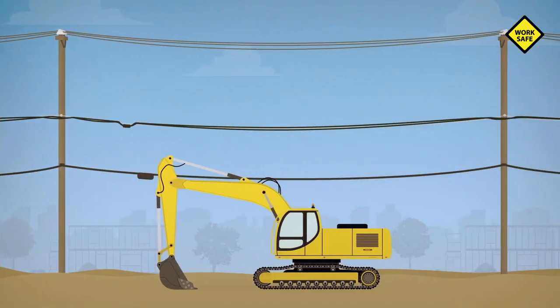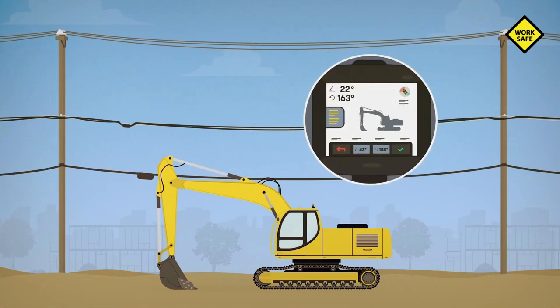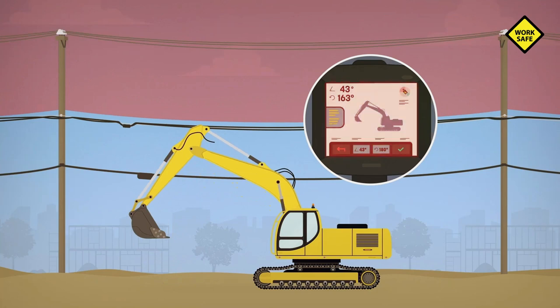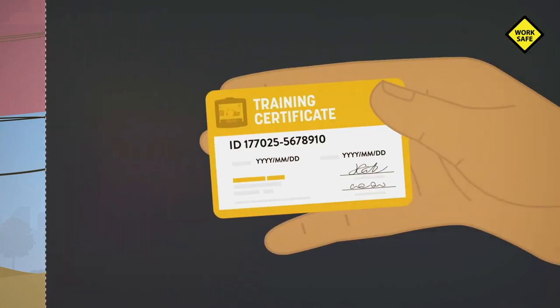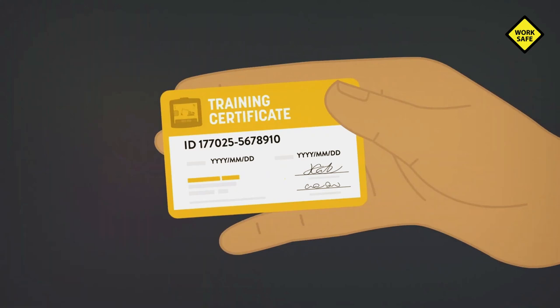Extendable equipment must be fitted with a range-limiting device. The range-limiting device automatically warns you and stops the machine if it comes close to the 3 meter mark. You must receive training from the manufacturer before you can program it properly.